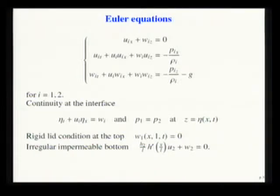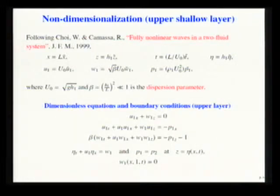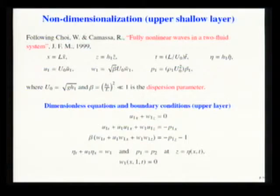The starting point is the Euler equations: conservation of mass, balance of momentum, continuity at the interface — namely two kinematic conditions and no pressure jumps allowed — a rigid lid condition at the top, and an irregular impermeable bottom. Following Choi and Camassa, the non-dimensionalization for the upper shallow layer is performed so that horizontal and vertical spatial coordinates are non-dimensionalized differently according to scale. We also have different scales for the two velocity components, and we introduce the shallow water velocity and the dispersion parameter beta, which is small since the upper layer is in the shallow water regime.